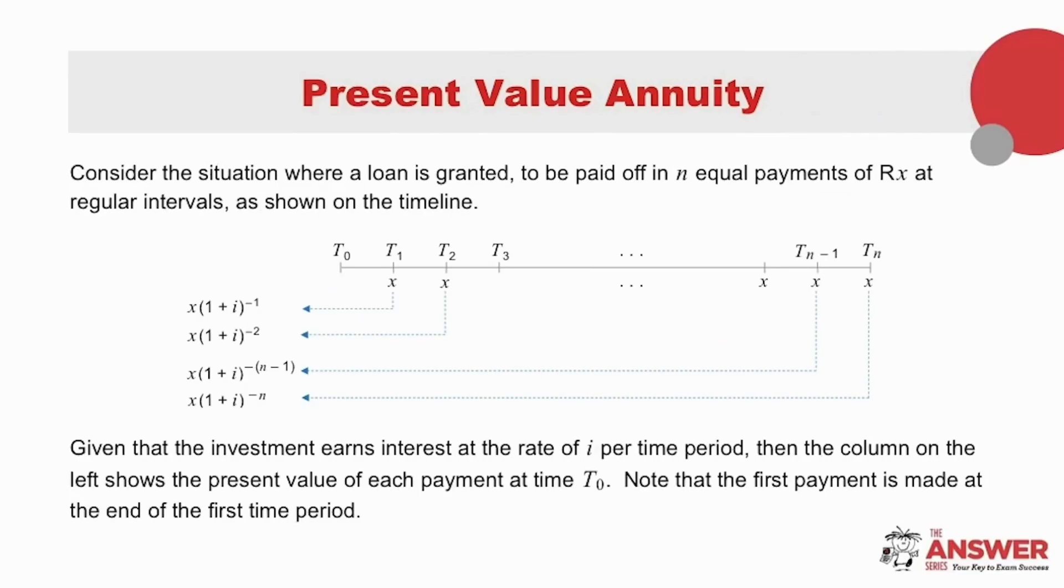Here we have a situation where a loan has been granted that needs to be paid off in n equal payments of x rand at regular intervals. If we look at the timeline, the loan was taken at t0. The first payment of x is made at t1, the next payment of x is made at t2, the next at t3, and so on, all the way up to the nth payment of x rand at tn.